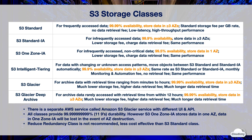S3 One Zone IA is for non-critical data that is accessed less frequently but requires rapid access when needed. It's designed for 99.5% availability, with data stored in one availability zone only. It's ideal for storing secondary backup copies or easily recreatable data. It's commonly used with S3 cross-region replication to store a secondary backup. With One Zone IA you pay a lower per-gigabyte storage price than Standard IA, as well as a data retrieval fee.